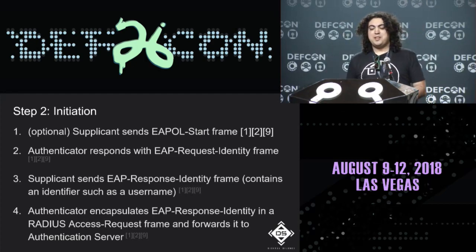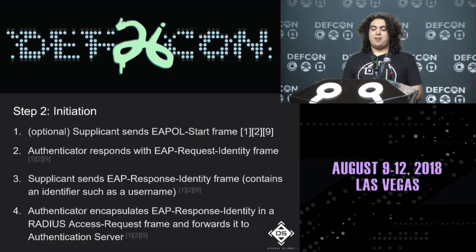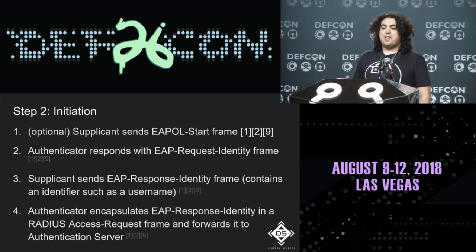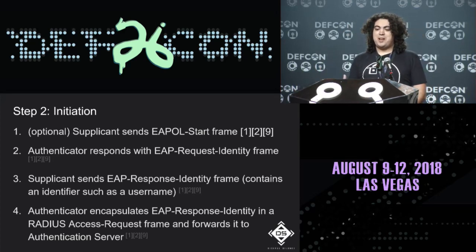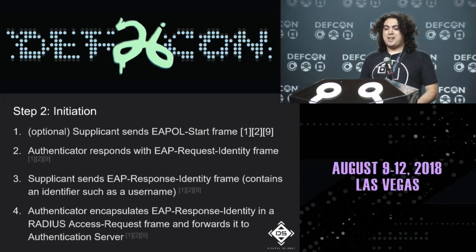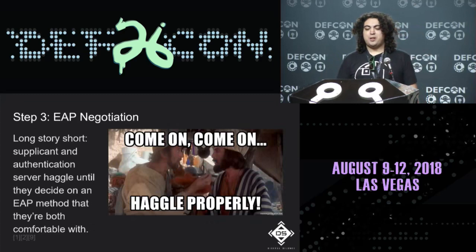In step two, initiation, the supplicant sends an EAPOL start frame to the authenticator, which responds with an EAP request identity frame asking 'who are you?' The supplicant responds with an EAP response identity frame containing the username. The authenticator encapsulates that in a RADIUS access request and forwards it to the authentication server, moving us to step three: EAP negotiation.